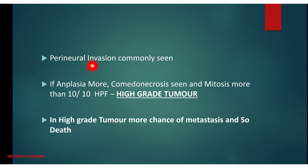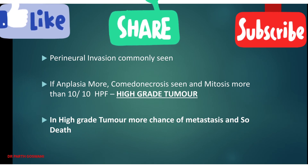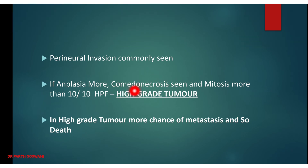Perineural invasion is commonly seen in adenoid cystic carcinoma and is a characteristic diagnostic feature — tumor cells are found just around the nerve. In high-grade tumors (grade 2 or 3), prognosis is very poor with higher metastatic potential. High-grade tumors show increased anaplasia, higher N:C ratio, hyperchromatic nuclei, size variation, necrosis, and mitosis greater than 10 per 10 high-power fields.